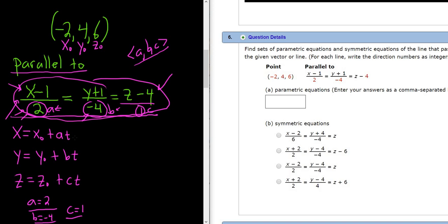Okay, so we just plug everything in. Let me go ahead and rewrite this. So x would be -2 plus, and then I guess it would be 2t, because a is 2. And then y would be, y naught would be 4. And b is -4, so minus 4t. And then z would be equal to z naught, so z naught is 6. And our c is 1, so just t. So these would be our parametric equations.